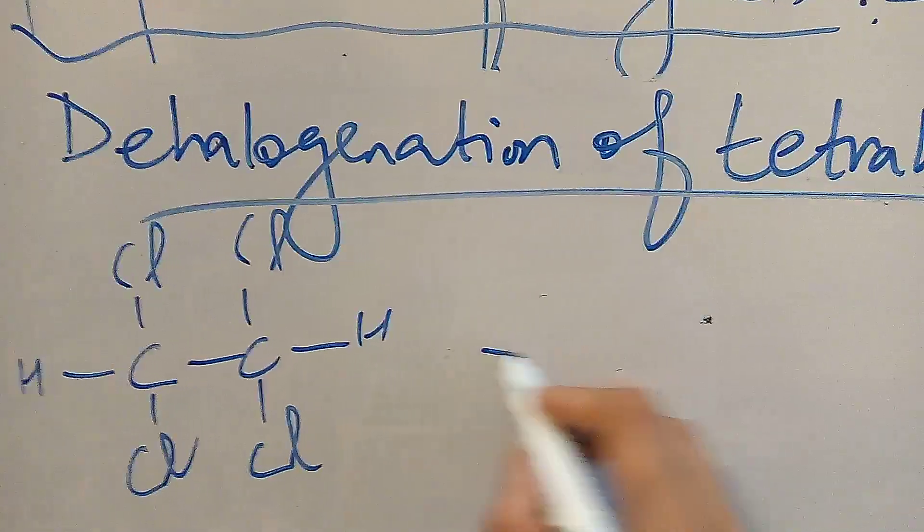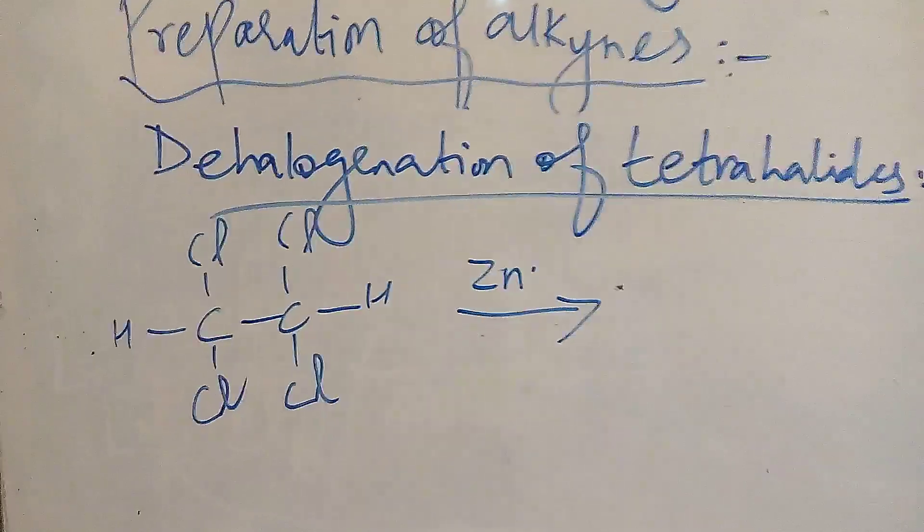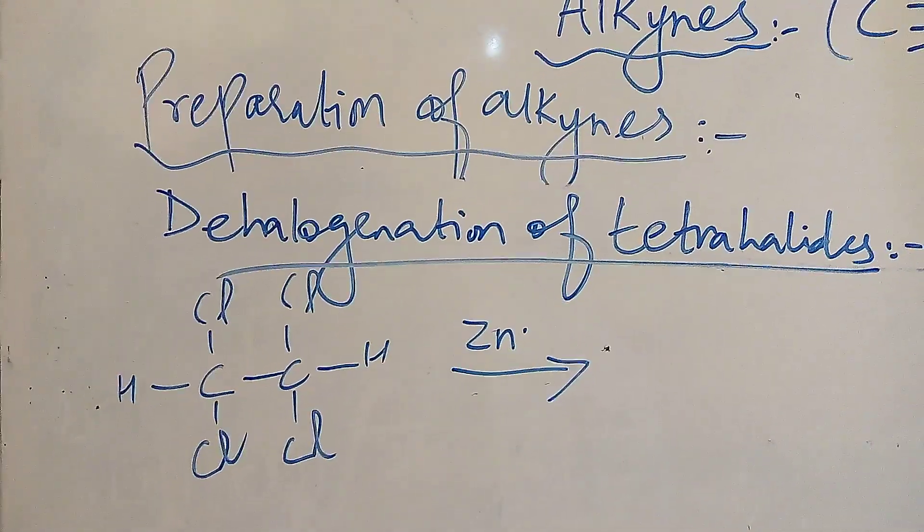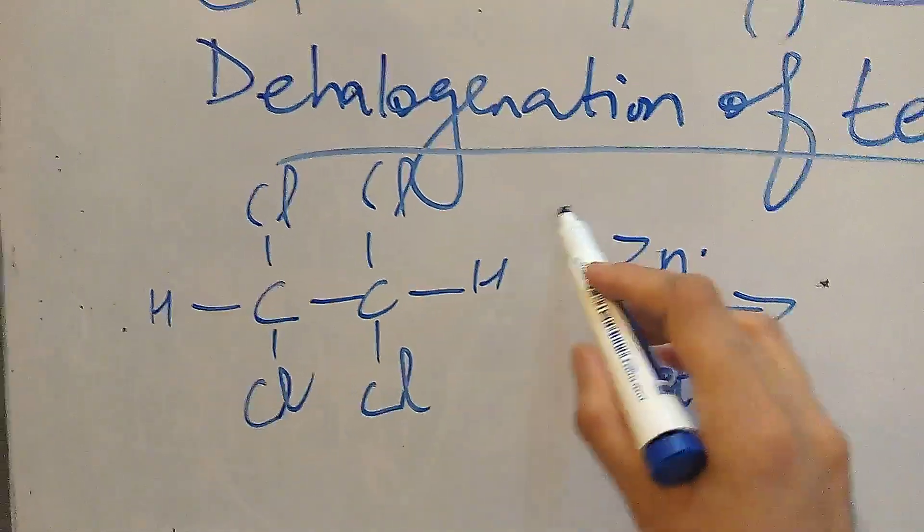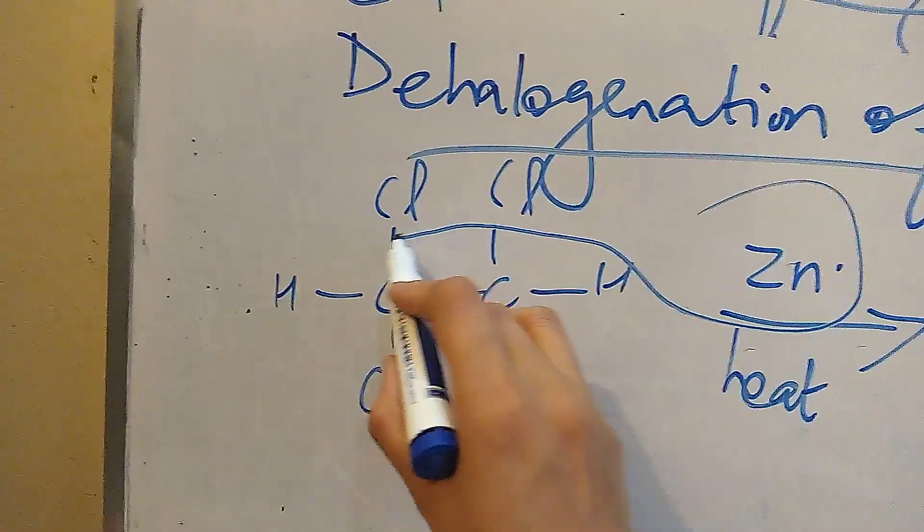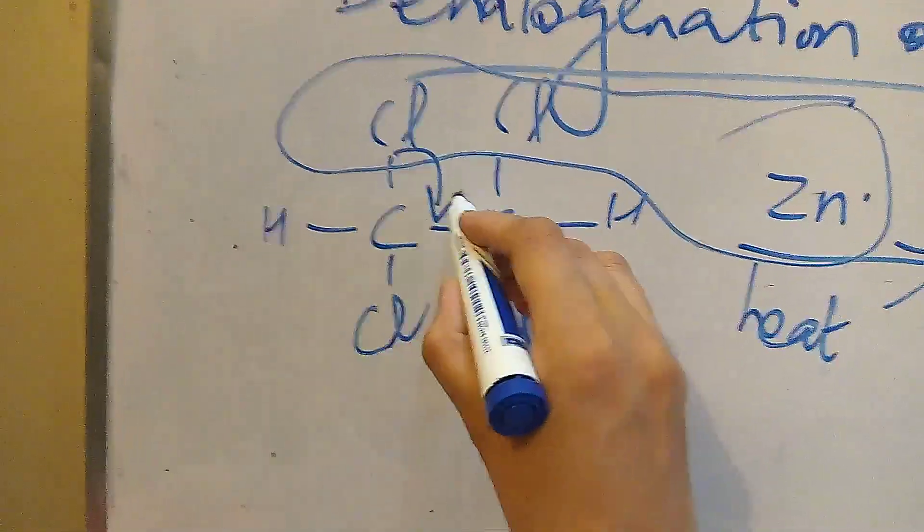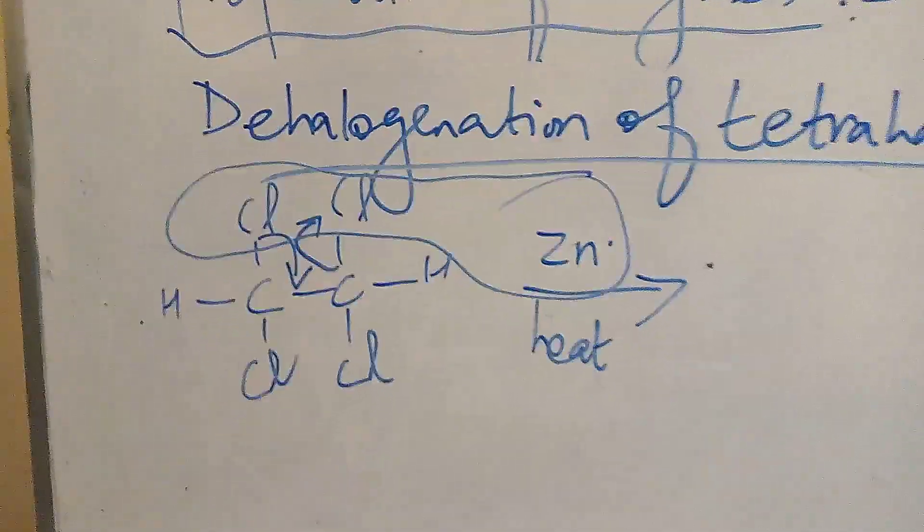We will carry out dehalogenation in the presence of zinc. When we carry out dehalogenation, it will take place in two steps. And we heat it. Then zinc will remove two chlorines at the same time. This bond will shift here and this bond will break. So we will get our product.